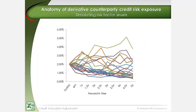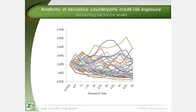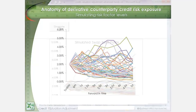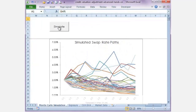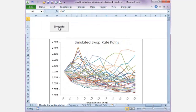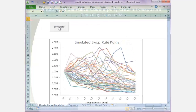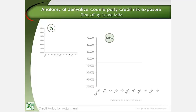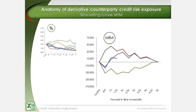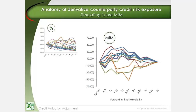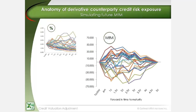A common method used to determine the mark-to-market at different points in time over the life of a derivative position is to simulate risk factor changes. The simulated risk factor changes are then used to recalculate mark-to-market over time.